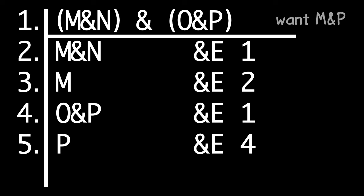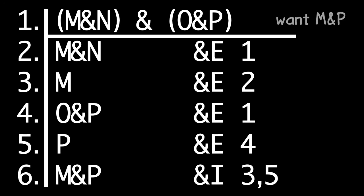Notice that we now have M on its own line, back on line three, and we have P on its own line, on line five. That means we can write down M and P by AND introduction applied to lines three and five. That's the conclusion of our argument. So we're done. This is a proof that proves the argument that we set out with.